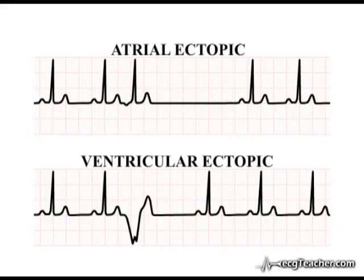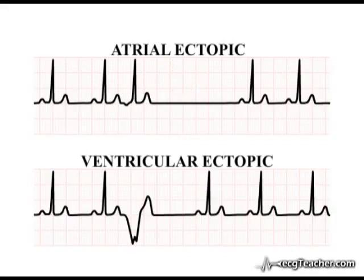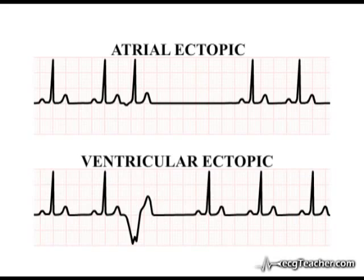Premature ectopic beats can originate from sites of enhanced automaticity in the atria or ventricles. Both occur early, that is before the next expected sinus beat. Atrial ectopics are transmitted into both branches of the ventricular conducting system, and therefore are associated with a normal QRS complex. Atrial ectopics are usually associated with a non-compensatory pause. In contrast, ventricular ectopics are generated in the ventricular wall or a component of the conducting system, and must travel at least in part through the slower conducting ventricular muscle. Consequently, they are associated with broad QRS complexes, and deranged repolarisation results in a non-concordant T wave. In addition, ventricular ectopics are usually followed by a compensatory pause.